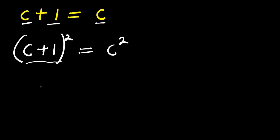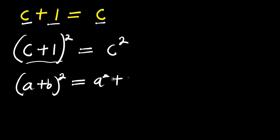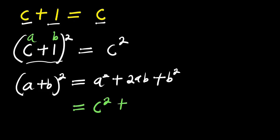To expand this, we refer to the identity: (a+b)² = a² + 2ab + b². In this case, c is our a and 1 is our b. So for a² we have c², plus 2 times c times 1.